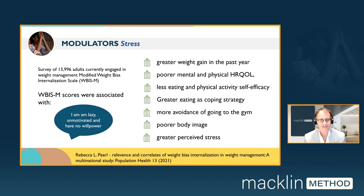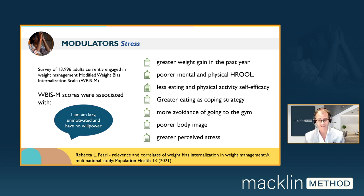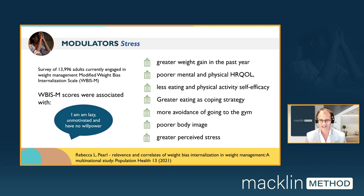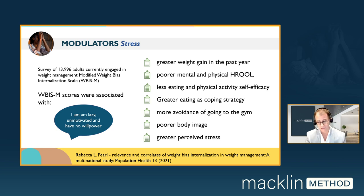What about weight bias? A key clinical trial by Rebecca Pearl and Rebecca Poole surveyed 14,000 individuals engaged in weight management programs using a validated measure of internalized weight bias — the feeling that it's their fault they struggle with weight, that they're lazy, don't have enough willpower, and won't succeed long-term. They found that the higher the score of internalized weight bias, the greater the weight gain in the past year, poor mental and physical quality of life, less eating and physical activity self-efficacy, greater eating as a coping strategy, avoiding the gym, poorer body image, and even greater levels of stress.